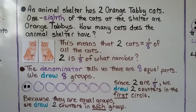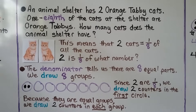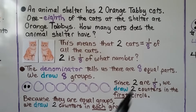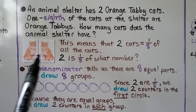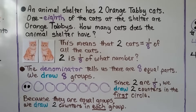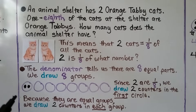An animal shelter has 2 orange tabby cats. One-eighth of the cats at the shelter are orange tabbies. How many cats does the animal shelter have? Well, this means that 2 cats are equal to one-eighth of all the cats — 2 is one-eighth of what number? The denominator tells us there are 8 equal groups, so we draw 8 groups.